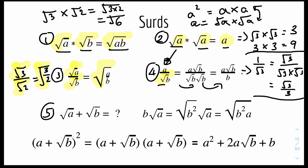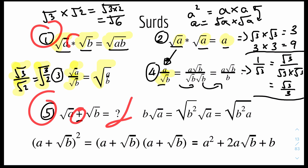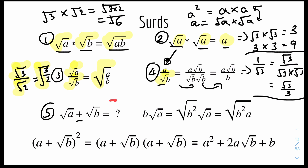Rule number 5 is one where people always get confused. Notice it's a plus, not a times. You can't multiply surd A and surd B together like in rule 1 because it's addition, not multiplication. So surd A plus surd B just remains as surd A plus surd B — it doesn't change or simplify to anything.